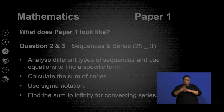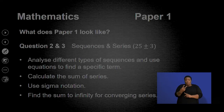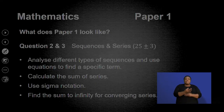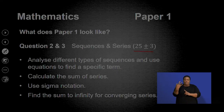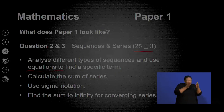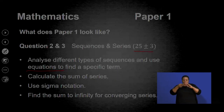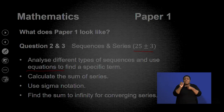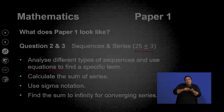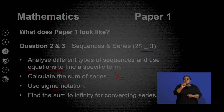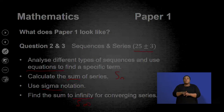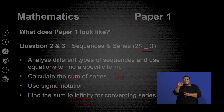Questions 2 and 3 will be sequences and series, covering 25 plus or minus 3 marks. Here you need to analyze different types of sequences and use equations to find a specific term. You also need to calculate the sum of the series — that's our S_n — use sigma notation, and find the sum to infinity. The formula is given on the information sheet.